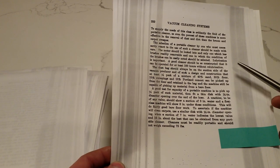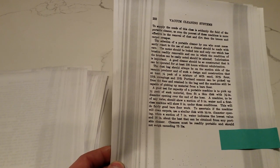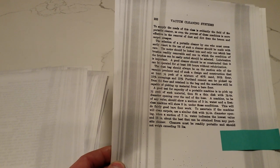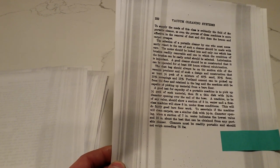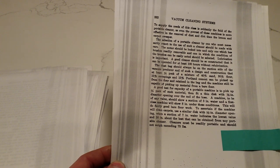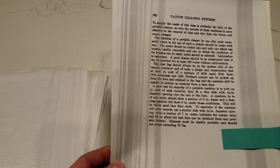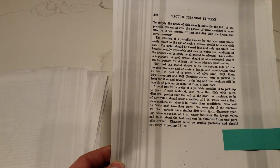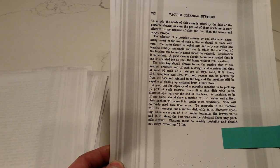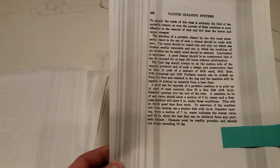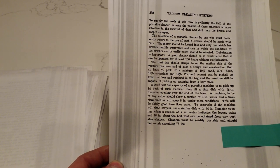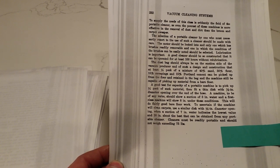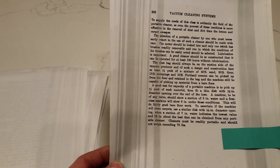The selection of a portable cleaner by one who must necessarily resort to the use of such a cleaner should be made with care. The motor should be looked into and only one which has brushes readily removable and one in which the condition of the brushes can be easily noted should be selected. A good cleaner should be so constructed that it can be operated for at least 100 hours without re-lubrication. Yes, make sure you take apart your portable vacuum and re-lubricate it every 100 hours.